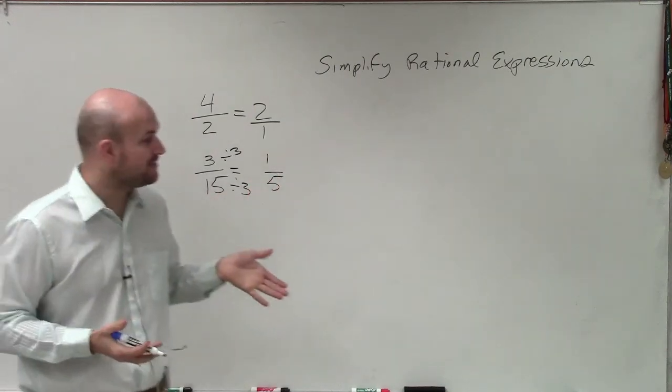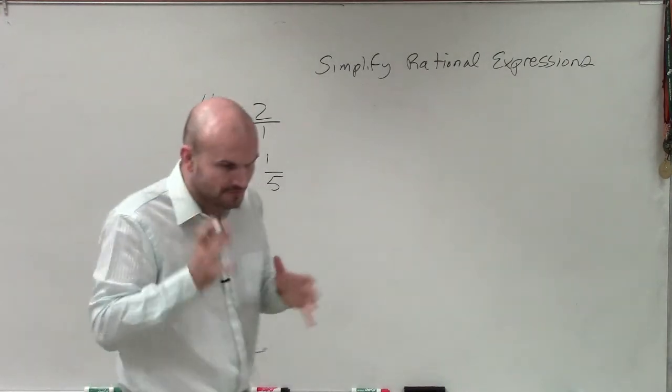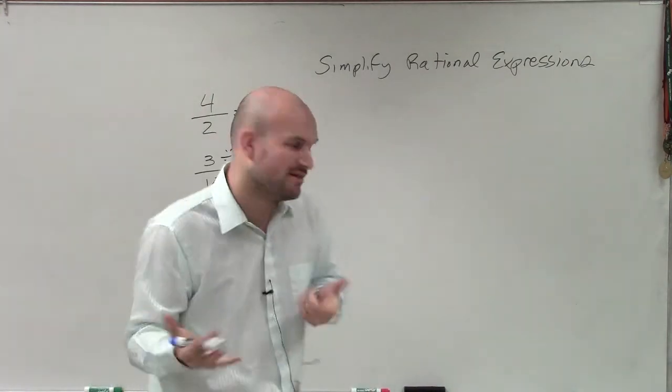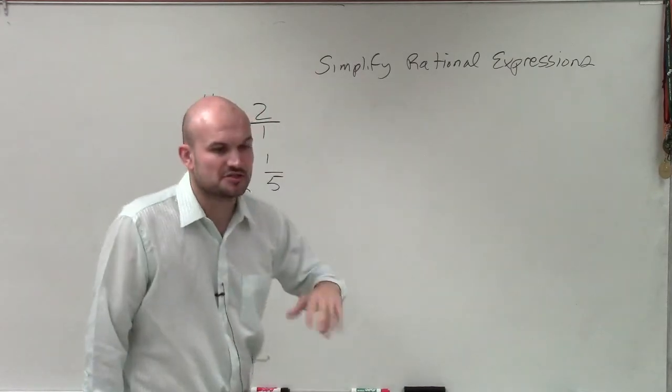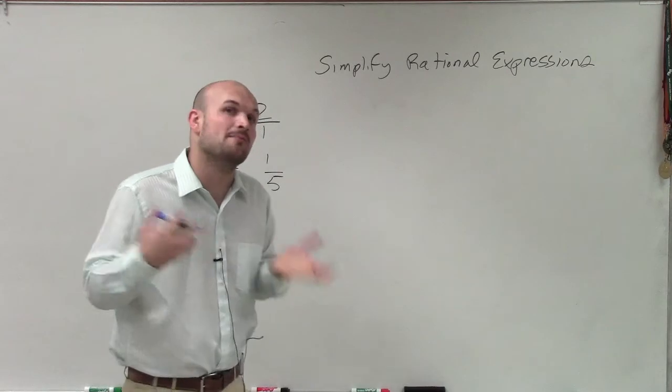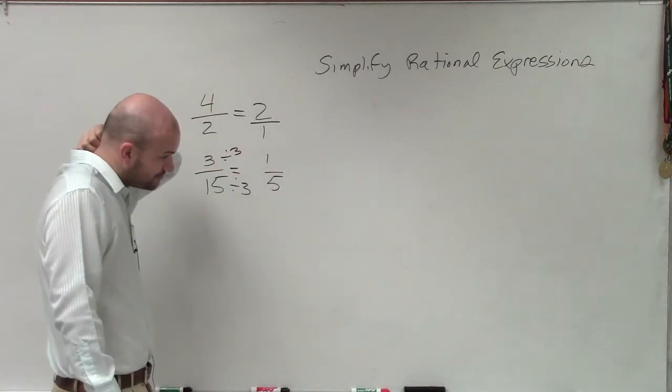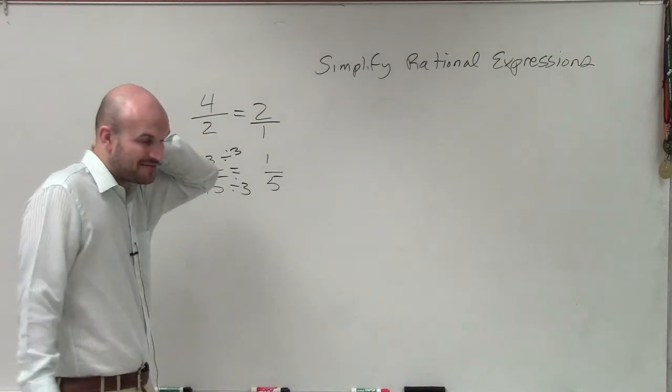So this fraction, 3 fifteenths, can be reduced down to 1 fifth, where their ratio is going to be equivalent. But now when we're talking about rational expressions, we're going to be talking about the division of polynomials, right? The sum of one or more monomials, not just dealing with numeric numbers or numeric values.